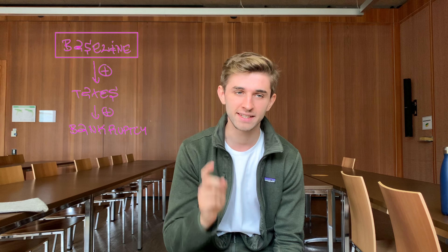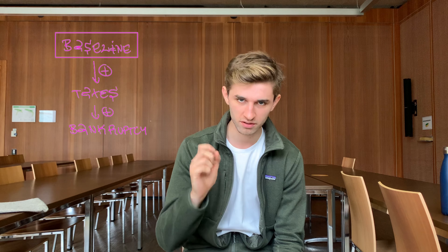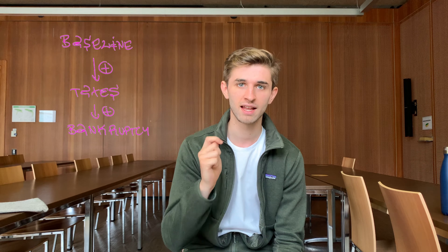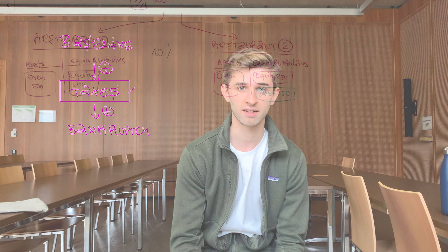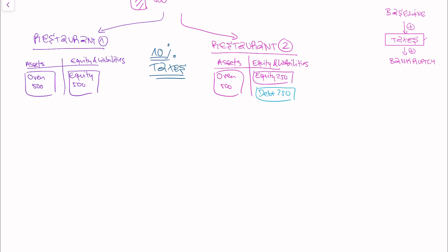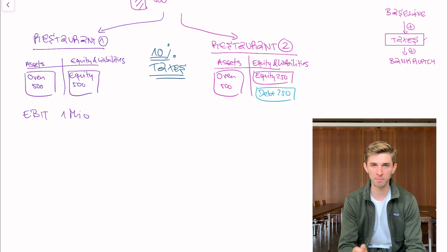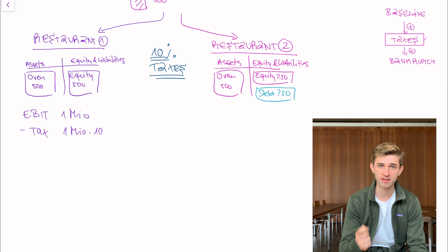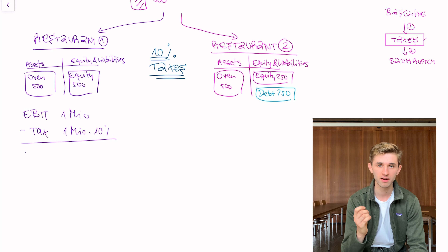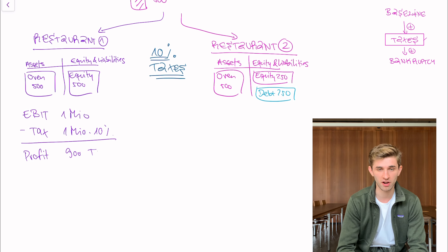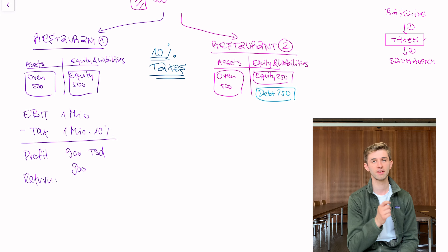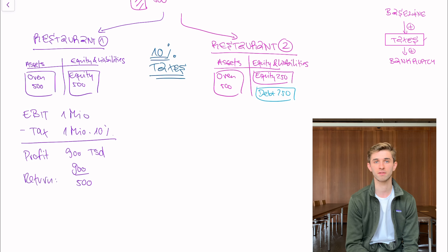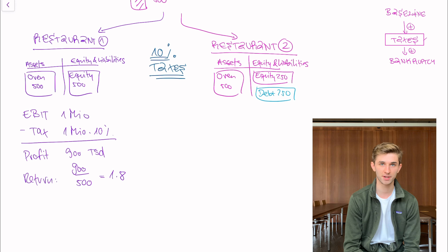So our model can't be finished yet — we have forgotten something. The most important factor determining the capital structure is taxes. Let's think about our restaurants again but introducing a 10% tax rate. Restaurant one has an EBIT of 1 million euros, but now we need to pay 10% taxes, which means earnings after taxes is 900,000. So the return for restaurant one is 900,000 divided by 500,000, which is 180%.